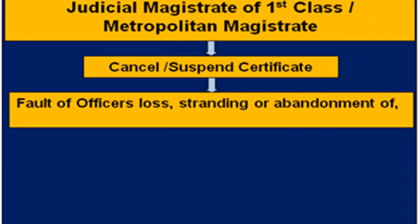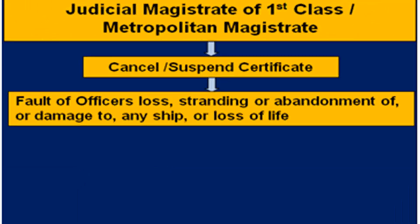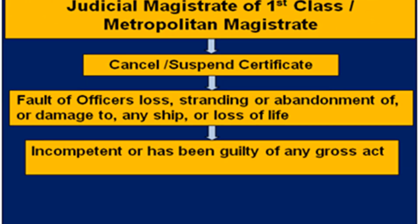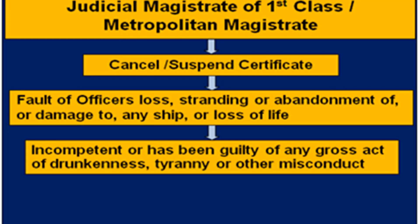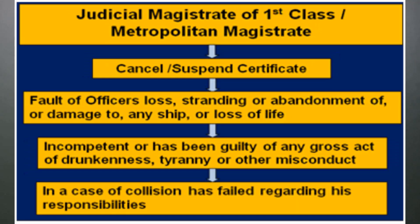Ground number one: stranding, abandonment of, or damage to any ship, or loss of life has been caused by the wrongful act or default of such master, mate or engineer. Number two: the court finds that the master, mate or engineer is incompetent or has been guilty of any gross act of drunkenness, tyranny or other misconduct. Number three: in a case of collision, the master, mate or engineer has failed regarding responsibilities for saving lives or communication.